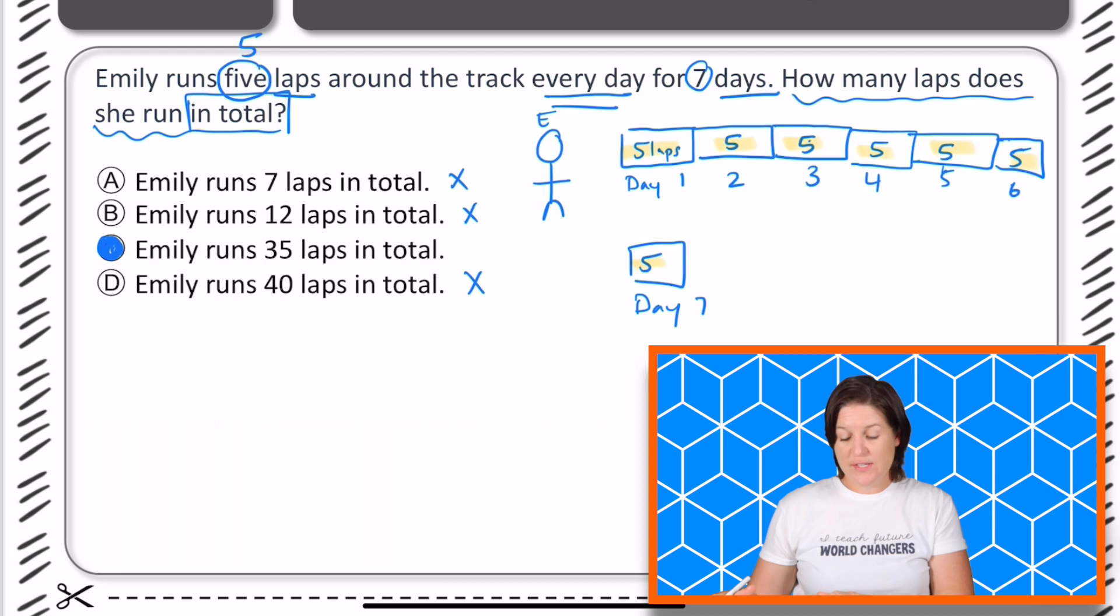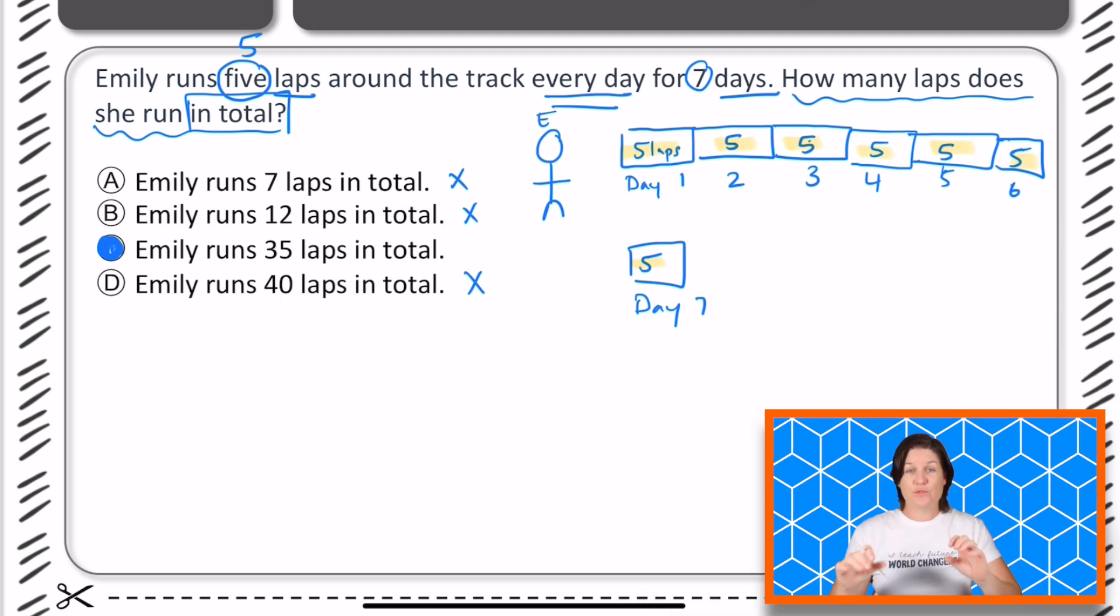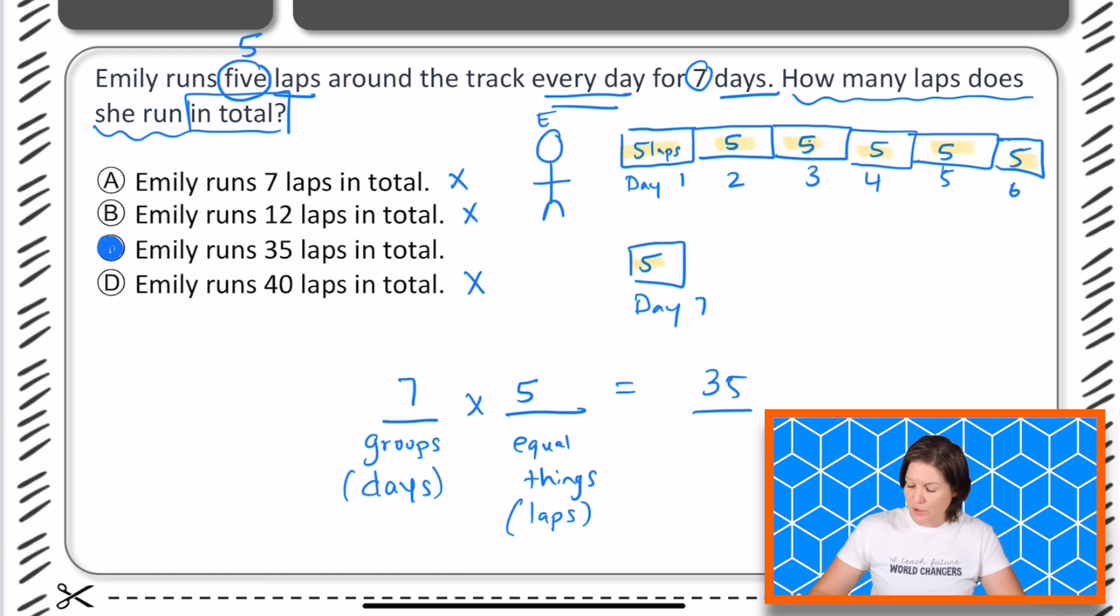Now, I also want to point out that what we see here, we have groups of equal things. We have days where she runs five laps. So if we have groups of equal things, that means that we are multiplying here. Our group would be the days, which would be seven. Equal things or equal amounts would be five laps. So seven days times five laps to equal thirty-five laps altogether as our product. Just to point out, this is called the product right here.